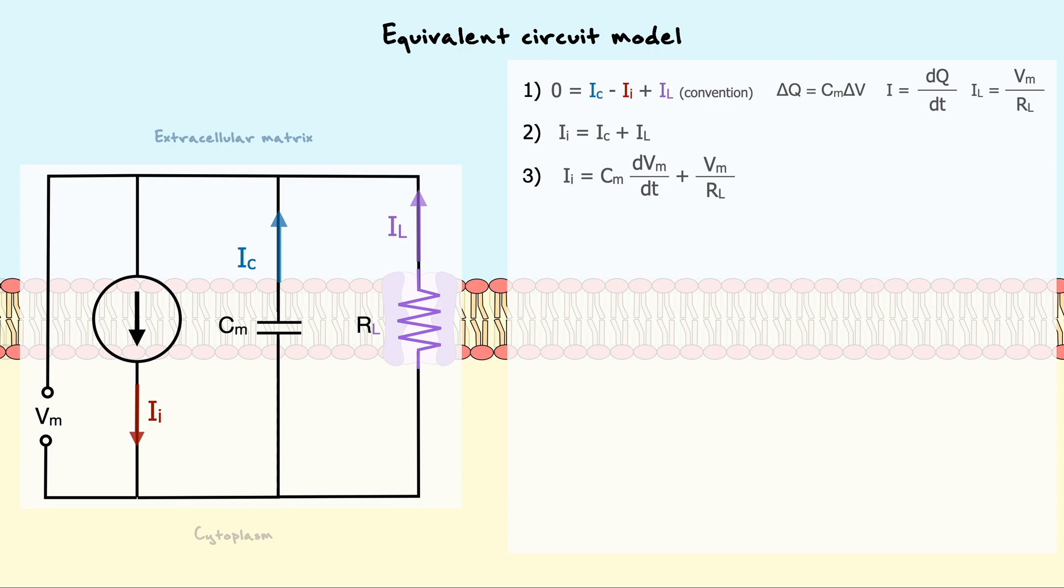For the resistive current, we can use Ohm's law. From there, we can multiply both sides by RL to get this expression. In this differential equation, we can find the steady state solution which occurs when the rate of change in membrane potential equals zero. With dV over dt being zero, it leaves us with Vm being equal to the injected current times the resistance of the membrane.